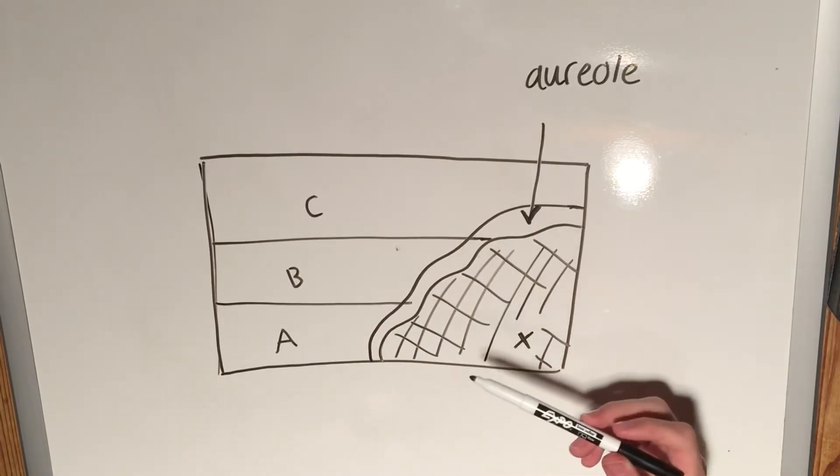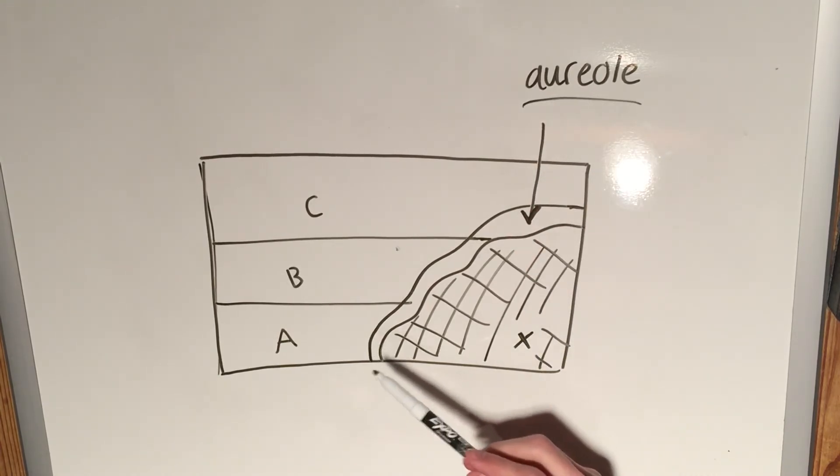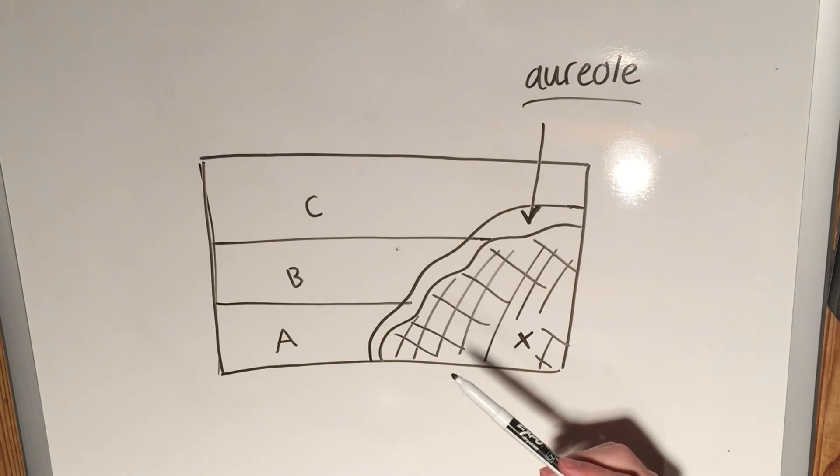Sometimes it can be thicker depending on the size. If it's a very large batholith, for example, it can have up to a few kilometers of this region that we call the aureole. It'll form this region of metamorphic rock that is its own complete unit in the geologic history and in the diagram itself of the region.